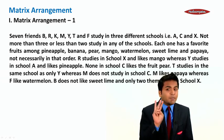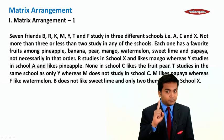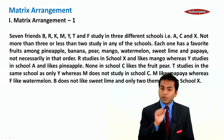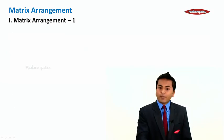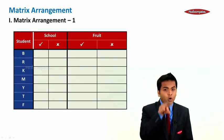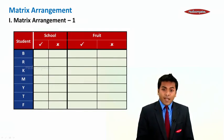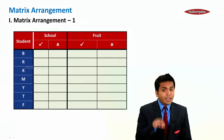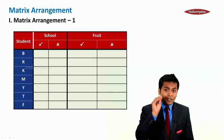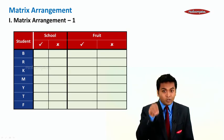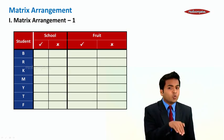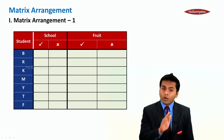There are three parameters: friend, school, and fruit. We will have three columns. One column for the student, another for school, and the next for fruit. Under school and fruit, there are two sub-columns: tick and cross. Tick means the student is assigned to that school or fruit; cross means they are not.